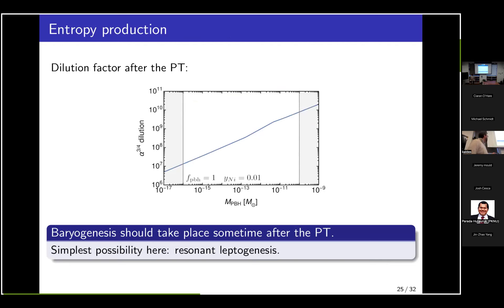Regarding baryogenesis: the large reheating effect will erase any baryon asymmetry produced from the plasma during or before the phase transition, so baryogenesis must occur after the phase transition. The natural possibility in this context is resonant leptogenesis.